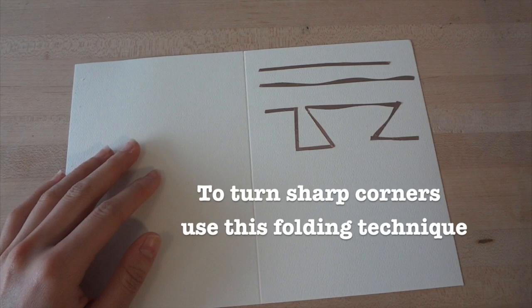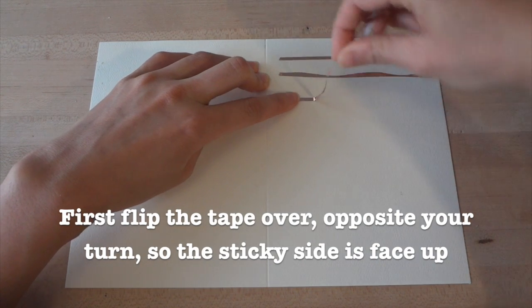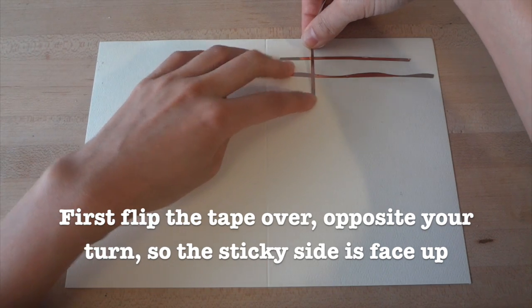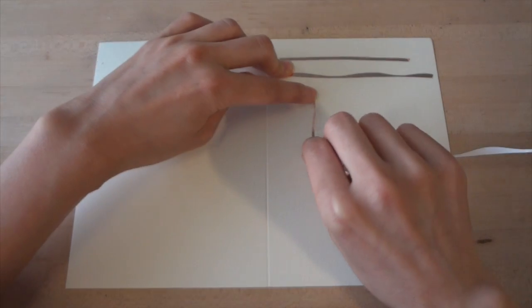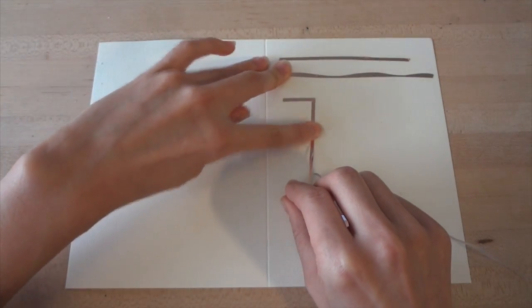If you want to turn sharp corners with your tape, try this folding technique. First, flip the copper tape over opposite your turn so that the sticky side is face up. Then, flip the tape back down in the direction of your turn. Finally, flatten the corner and you've got a nice clean turn.